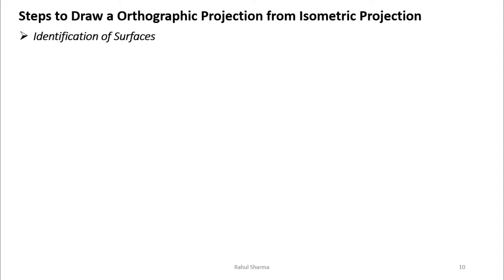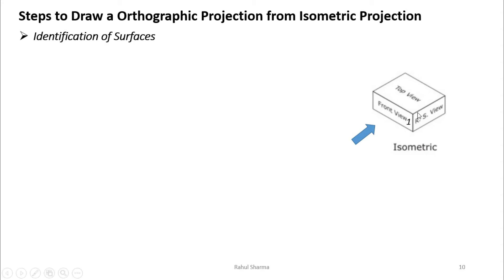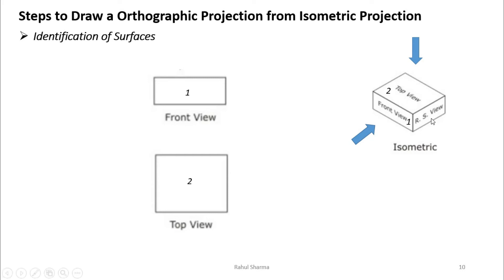The first step is identification of surfaces. Given an isometric object with a defined front view direction, you can only see surface one from that side — the other surfaces become perpendicular to your eyes and are not visible. Only the surface parallel to your eyes is visible. Similarly, from the top you see only surface two, and from the side only surface three. Identification means: find which surfaces are visible in each particular view.